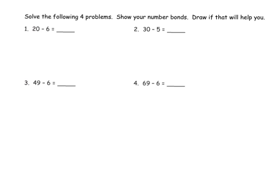All right, so it says solve the following four problems using number bonds. So let's do it. 20 minus 6, well I'm going to take the 20 and break it apart to 10 plus 10. And then we've got 10 minus 6, there's our 4, so now we have 10 plus 4 is 14.